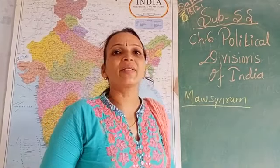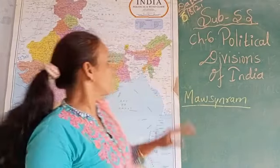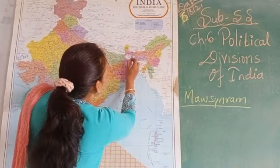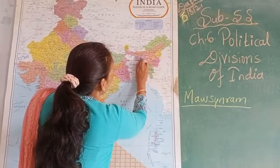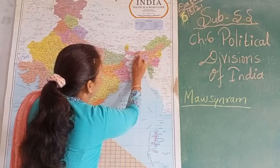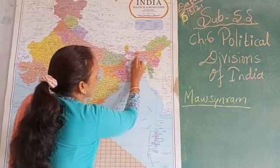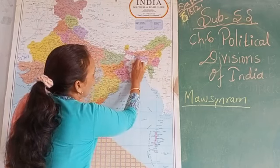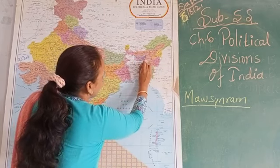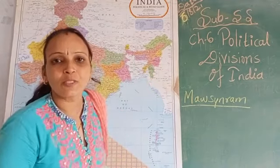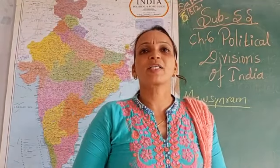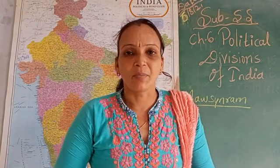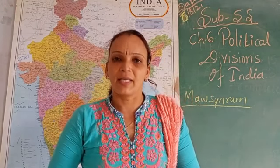Assam — its capital is Dispur. Assam shares its border with Bhutan. The spoken language of Assam is Assamese.